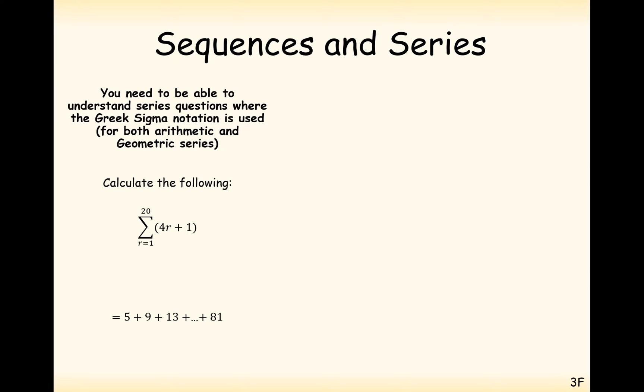Okay, so in this question here, calculate the following. The sum from 1 up to 20 of 4r plus 1. It sometimes helps to write out and visualize the numbers that you're going to be adding up. So substituting 1 first you get 5. Substituting 2 next you get 9. Substituting 3 next you get 13. You keep on doing this until you get up to 20, which gives you 81, and you add all of those results together.